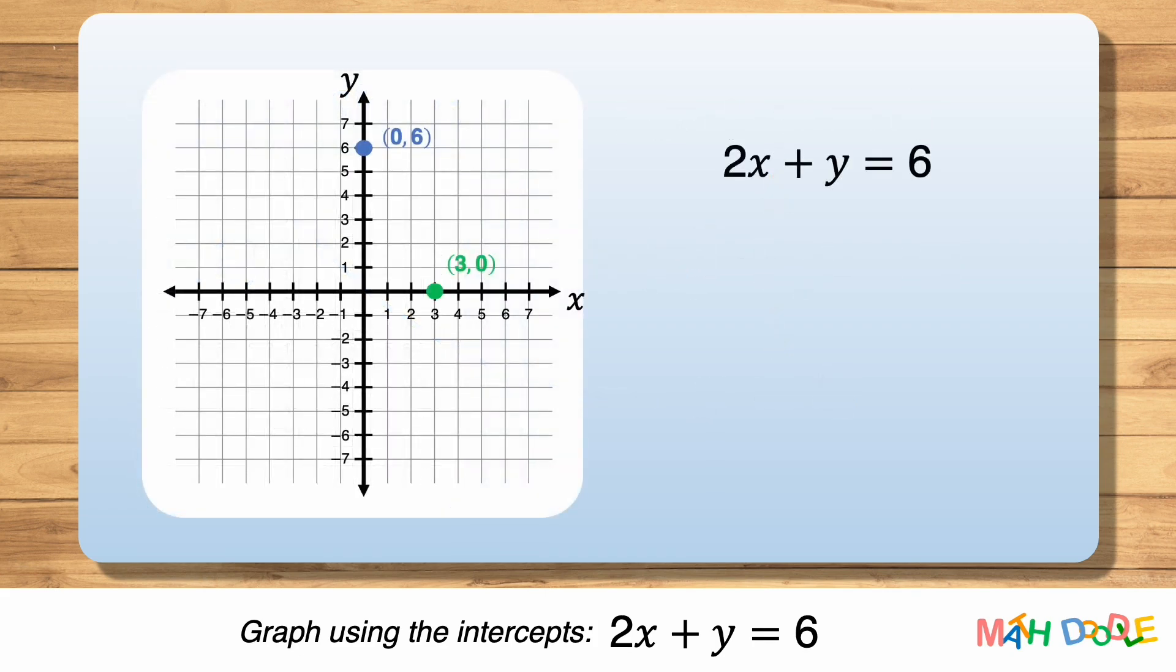Now, let's find another point the line passes through, so we can graph the line accurately. For this, we can choose any value for x or y. Here, let's use x equals 1 and find the value of y when x is 1.